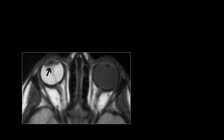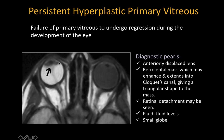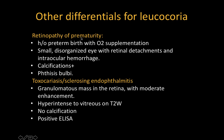Another differential for leukocoria is persistent hyperplastic primary vitreous (PHPV) — failure of the primary vitreous to regress during eye development. Radiologically: the lens is anteriorly displaced, there is a retrolenticular opacity that can enhance and extends into Cloquet's canal, giving a triangular appearance to the mass. It may be associated with retinal detachment and vitreous hemorrhage, and the globe is usually small. When you see a retrolenticular opacity with a triangular shape, think PHPV.